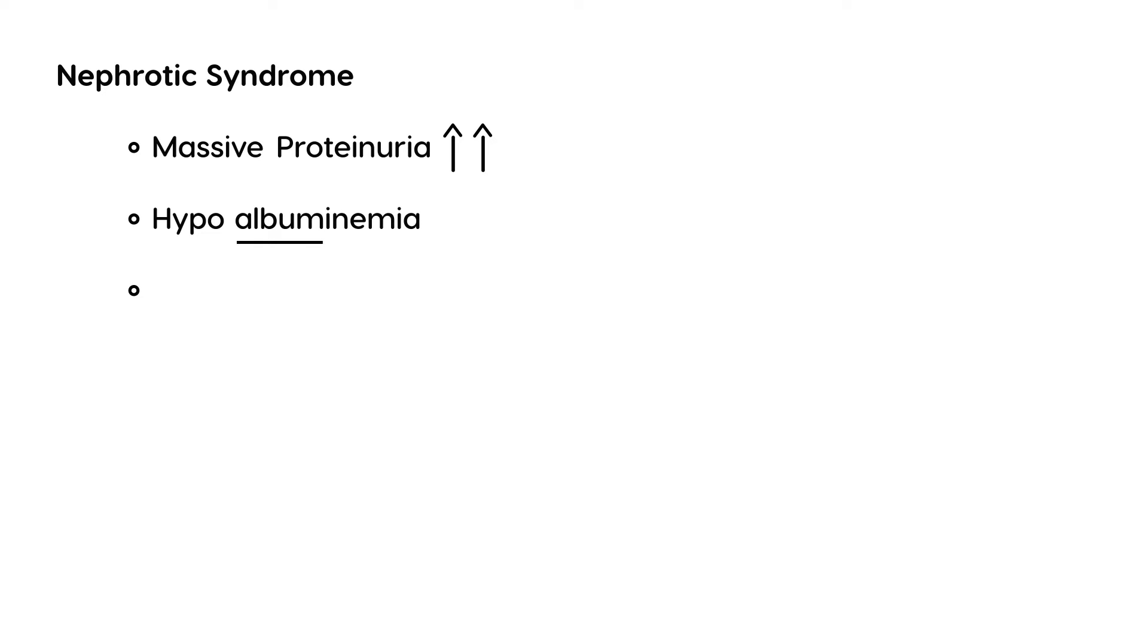And the third thing is edema. Now this happens because there's a pathology in the kidney. Normally protein is not supposed to go out into urine in large quantities, but if it does, that obviously means there's a pathology in the kidney. This happens directly because the protein is being lost, so that means there's less protein in the blood.